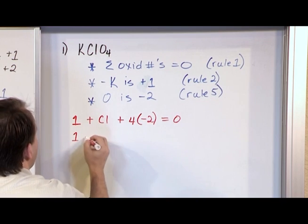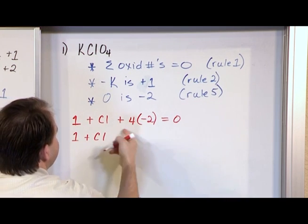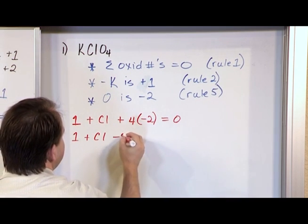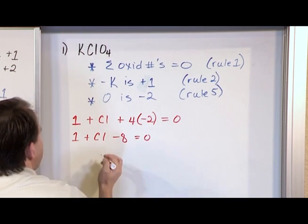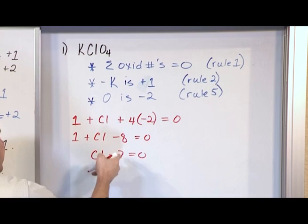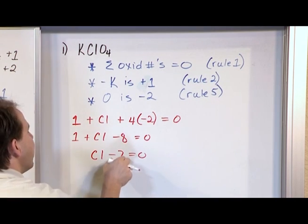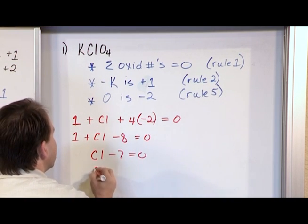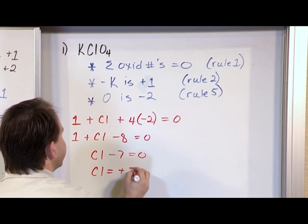So what I do is I say one plus Cl, four times negative two gives me negative eight is equal to zero. And then I have Cl minus seven is equal to zero because negative eight plus one gives me negative seven. And if I move the seven to the other side, then chlorine is plus seven.